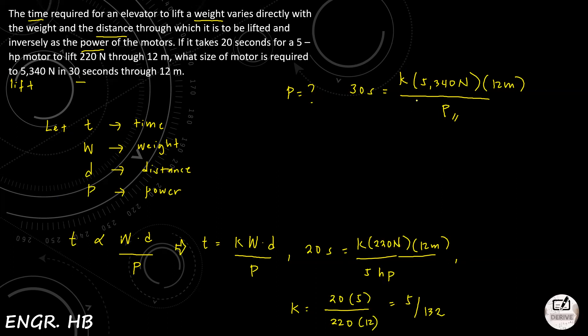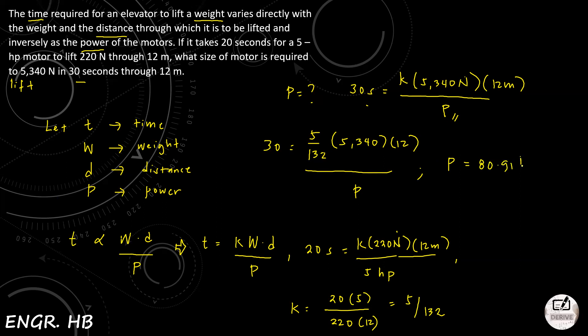Be careful with units — seconds for time, newtons for force/weight, meters for distance — so the power P should come out in horsepower. So: 30 = (5/132) × 5,340 × 12 / P. Using the calculator, P = (5/132) × 5,340 × 12 / 30 = 80.91 horsepower. So that's the answer for the second question.